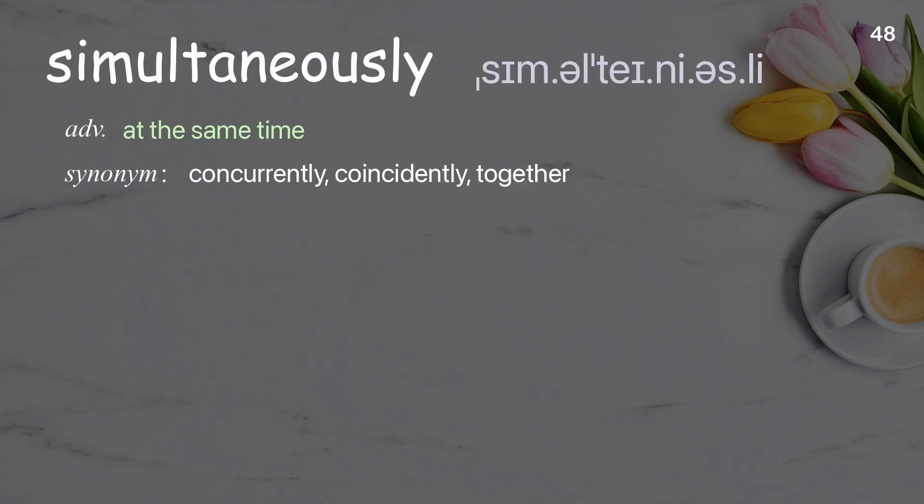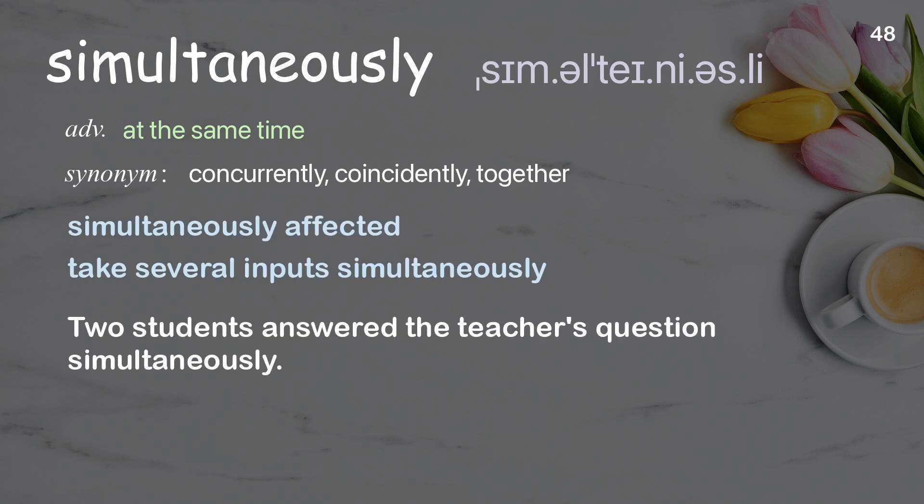Simultaneously: At the same time. Examples: Simultaneously affected. Take several inputs simultaneously. Two students answered the teacher's question simultaneously.